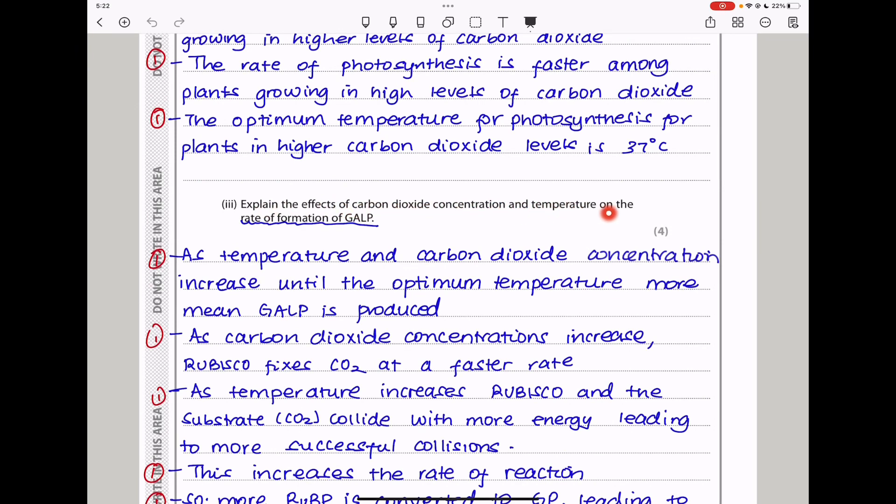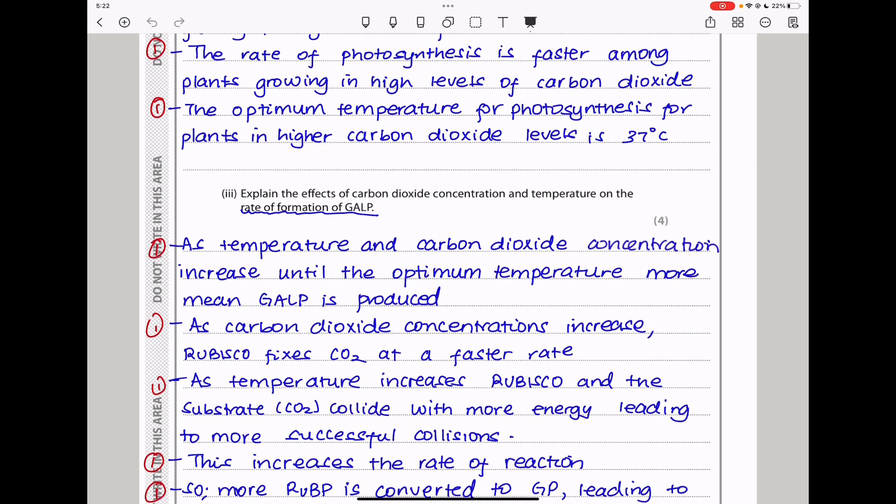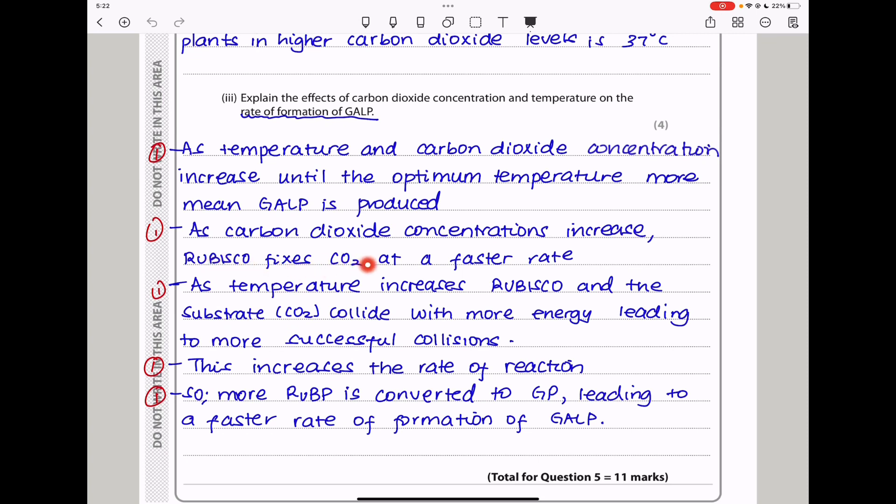Here they say explain the effects of carbon dioxide concentration and temperature on the rate of formation of GALP. We know that GALP is formed in the light-independent reactions, and CO2 is fixed using Rubisco enzyme. Enzymes are temperature sensitive. The higher the temperature, the higher the fixation rate, or the higher this enzyme is going to work, until the optimum temperature for that enzyme is reached. As temperature and carbon dioxide concentration increase until the optimum temperature, more GALP is produced. As carbon dioxide concentration increase, Rubisco fixes carbon dioxide at a faster rate. As temperature increases, Rubisco and the substrate, which is CO2, collide with more energy, leading to more successful collisions, and this increases the rate of reaction. More ribulose bisphosphate is converted into glycerate-3-phosphate, leading to a faster rate of photosynthesis.